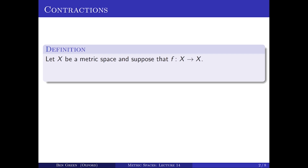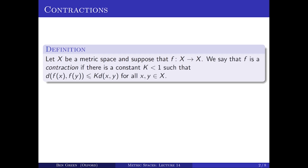Let's turn first then to the contraction mapping theorem. Before stating it, we need to know what is meant by a contraction. Let X be a metric space and suppose that F is a map from X to itself. Then it's said to be a contraction if there is a constant K strictly less than one such that the distance between F(x) and F(y) is less than or equal to K times the distance between x and y for all little x and little y in big X. So F moves points closer together by at least this fixed factor K that's strictly less than one. It's a very easy exercise to show that every contraction is a continuous map — in fact you can take delta equals epsilon everywhere, so it's a uniformly continuous map.